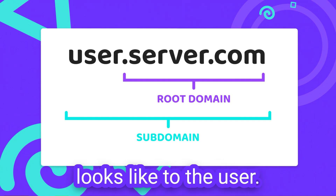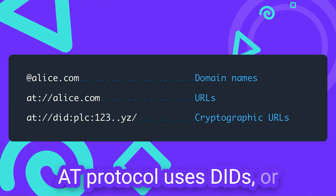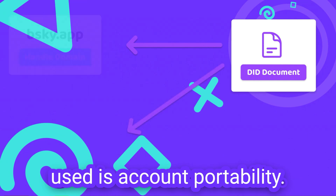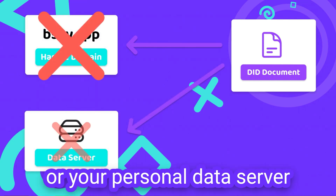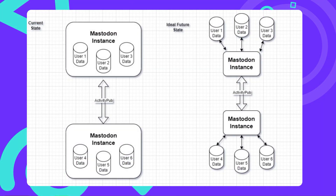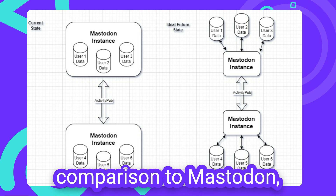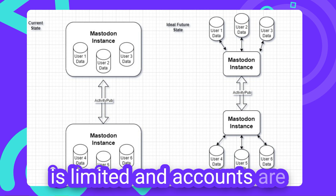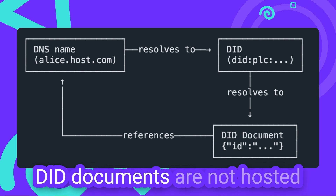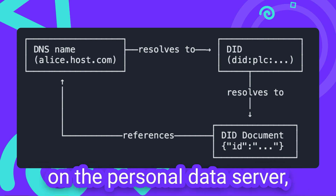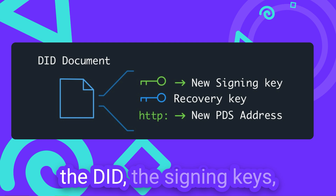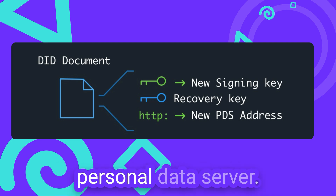At least that's what it looks like to the user. In the background, the AT protocol uses DIDs, or Decentralized Identifiers. The main reason DIDs are used is account portability. Even if you lose your domain or your personal data server goes down, you'll still be able to restore your account using a recovery key. This is another benefit in comparison to Mastodon, where account portability is limited and accounts are not restorable if your server decides to just shut down. To achieve account portability, DID documents are not hosted on the personal data server but in a central DID registry. They include data like the handle associated with the DID, the signing keys, and the URL of the user's personal data server.